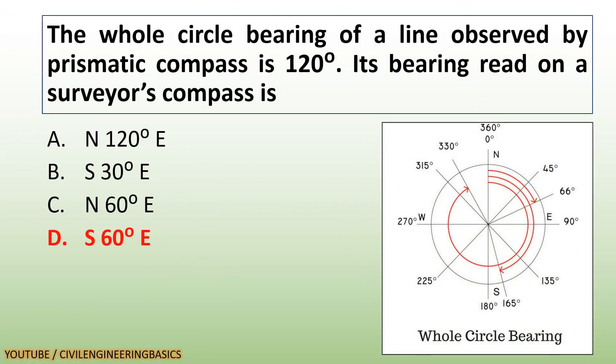The whole circle bearing of a line observed by prismatic compass is 120°. Its bearing read on a surveyor's compass is South 60° East. Whole circle bearing is measured from 0° to 360°, and in surveyor's compass the bearing is measured by its quadrant.